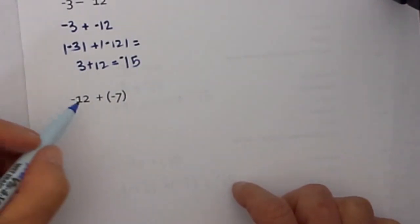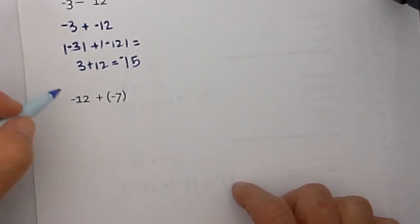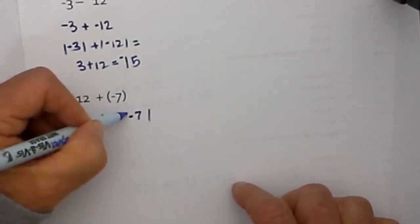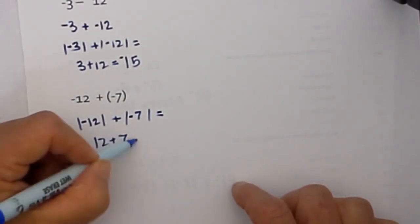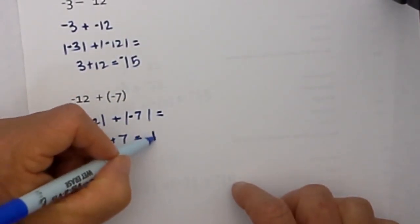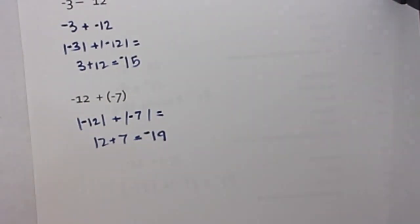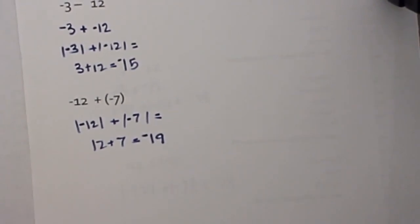And finally, the last one: we have negative 12 plus negative 7. Is the problem addition? Yes. Are the signs the same? Yes. So it will be the absolute value of 12 plus the absolute value of 7, which is 12 plus 7, equal to 19. Then you take the sign of the two numbers, which is negative, so it will be negative 19. I hope that helps with adding and subtracting integers. Remember, MooMooMath uploads a new math video every day. Please subscribe and share to our channel.